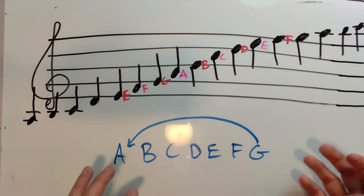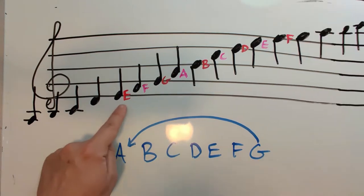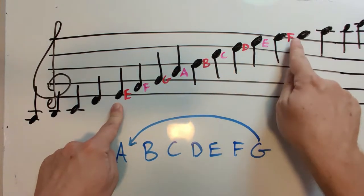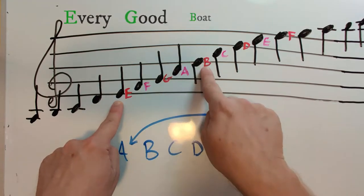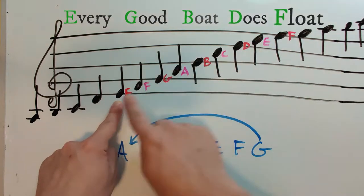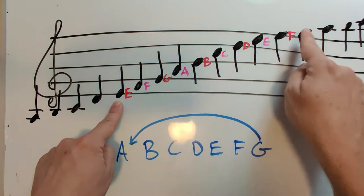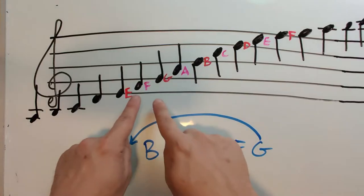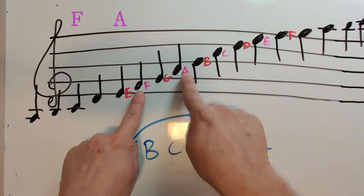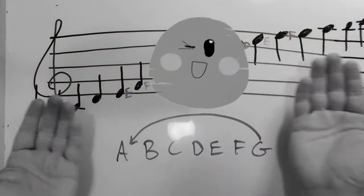We also learned that an easy way to remember all the lines is by coming up with a saying. E for Every Good Boy Does Float. E, G, B, D, F. We also learned the pattern for the spaces: F, A, C, E. It spells out the word FACE.